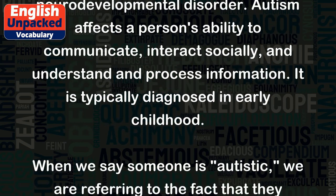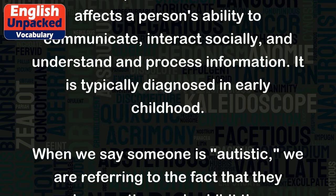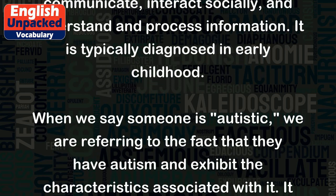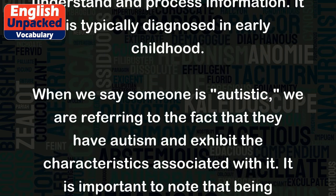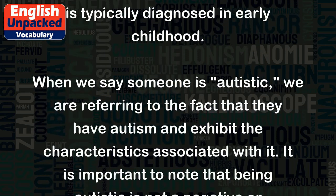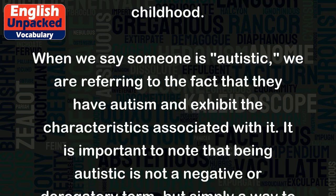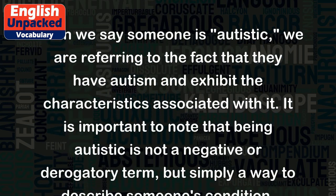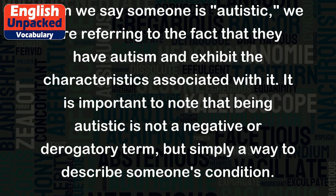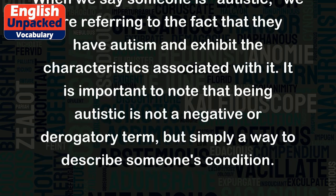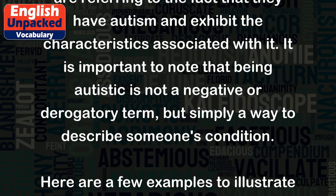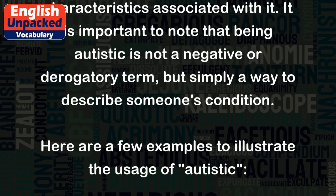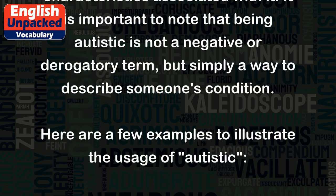It is typically diagnosed in early childhood. When we say someone is autistic, we are referring to the fact that they have autism and exhibit the characteristics associated with it. It is important to note that being autistic is not a negative or derogatory term, but simply a way to describe someone's condition.